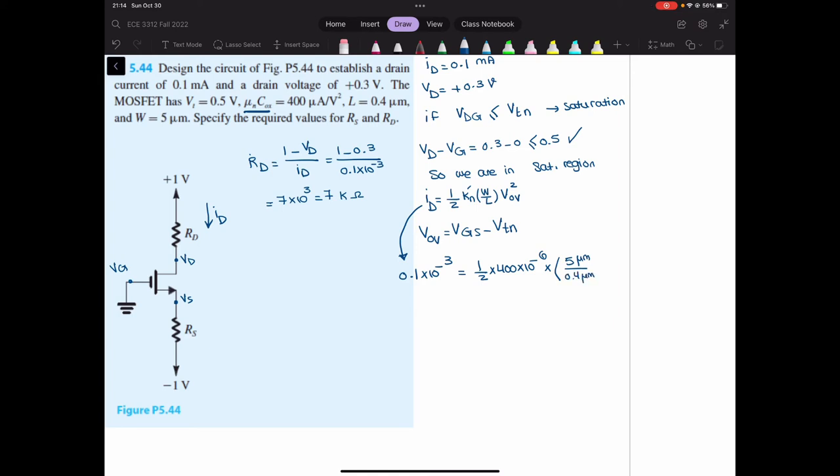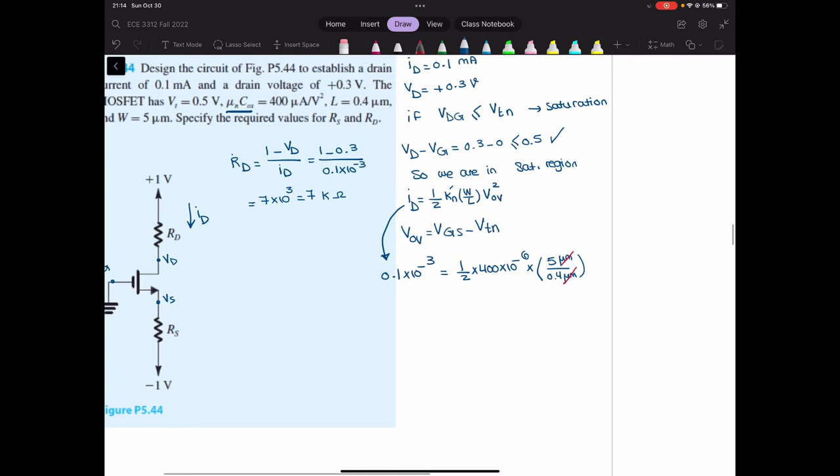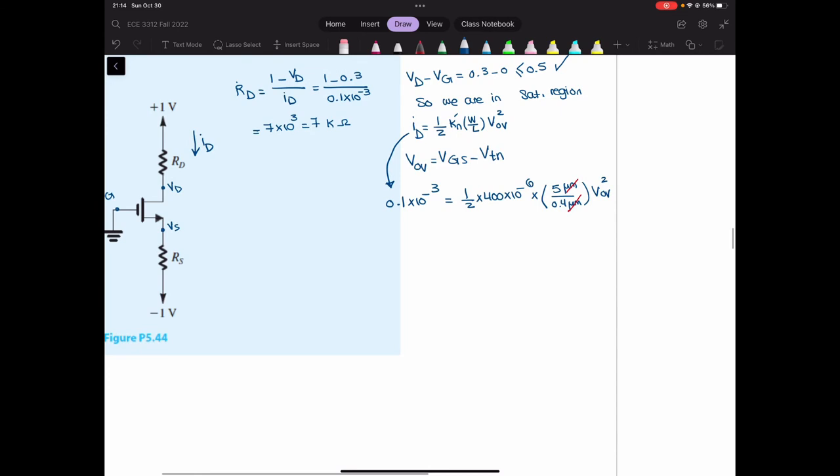Why didn't I write 10 to the negative 6 for these two? Because micrometer and micrometer will be cancelled over here. And then W over L doesn't have any unit. Now this multiplied by VOV squared that I want to find out what is VOV.